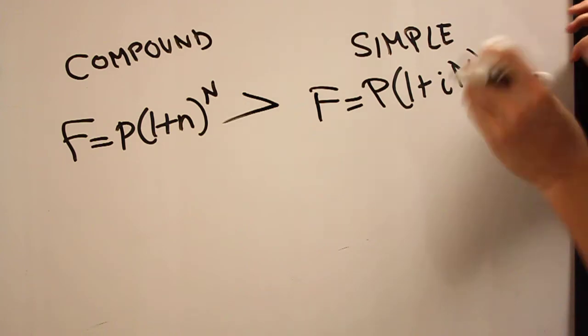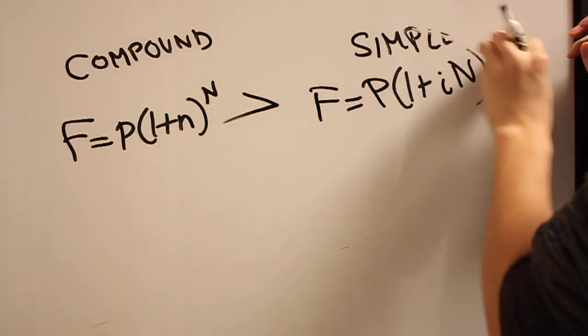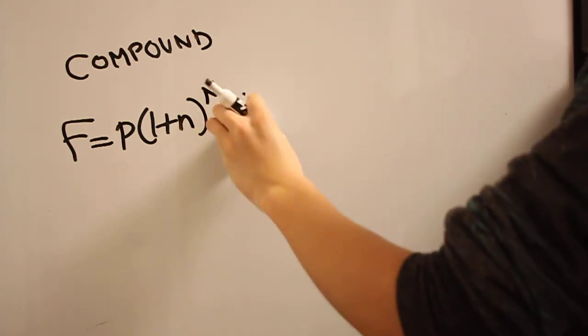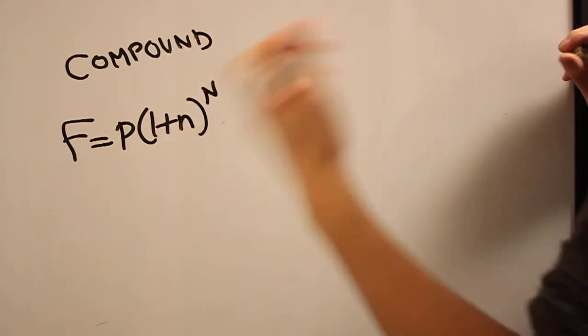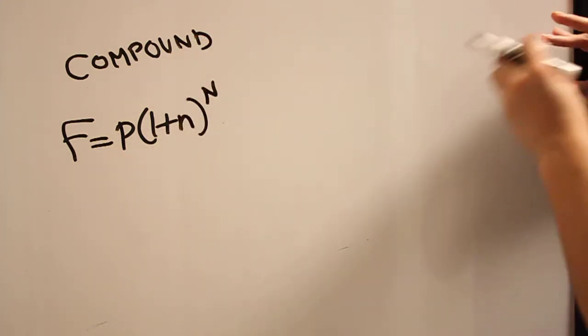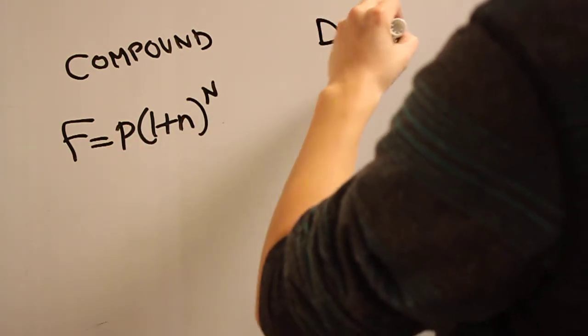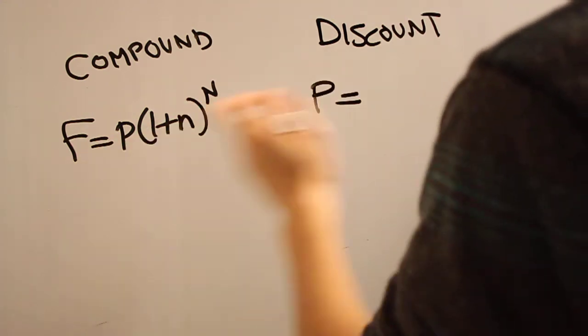Now let's look at one more very quickly, and that's discounting. Let's look back at this. You wanted to know the final amount of money you had after doing an investment. Well, what if you know what you want to get, and you want to know how much you should put in the bank a certain amount of time in the past?